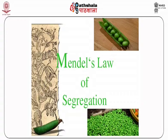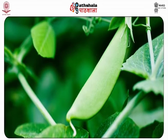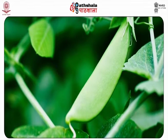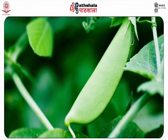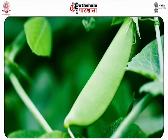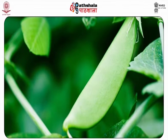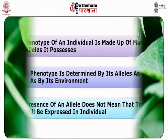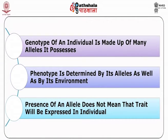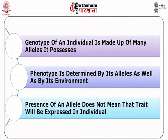This is known as the law of segregation. Mendel also found that each pair of alleles segregates independently of other pairs of alleles during gamete formation. This is known as the law of independent assortment. The genotype of an individual is made up of the many alleles it possesses. An individual's physical appearance, or phenotype, is determined by its alleles as well as by its environment. The presence of an allele does not mean that the trait will be expressed in the individual that possesses it.